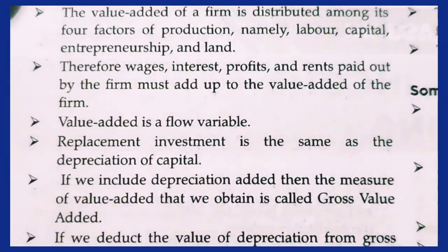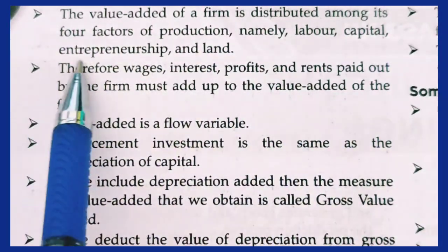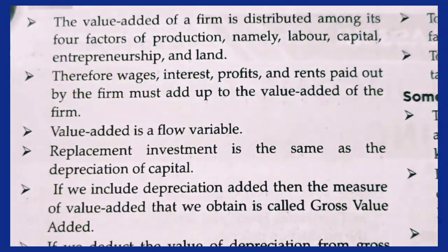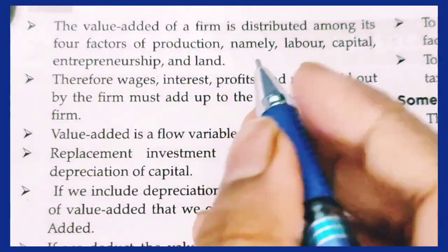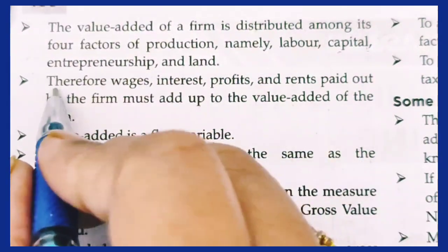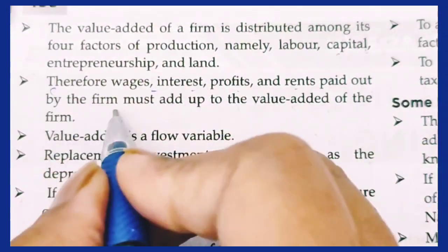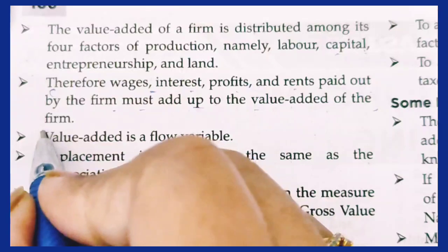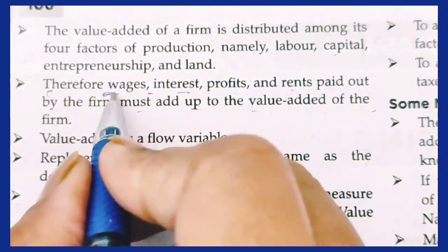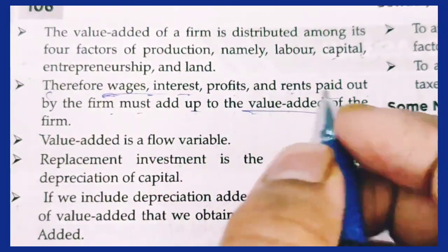The value added of a firm is distributed among its four factors of production: labour, capital, enterprise, and land. Therefore, wages, interest, profit, and rent paid out by the firm must all be added up to arrive at the value added by the firm.